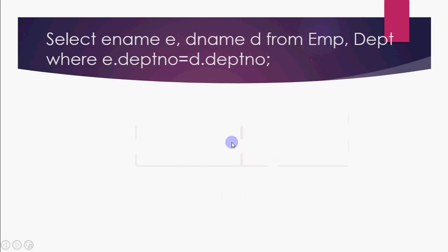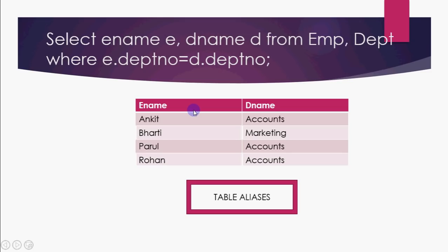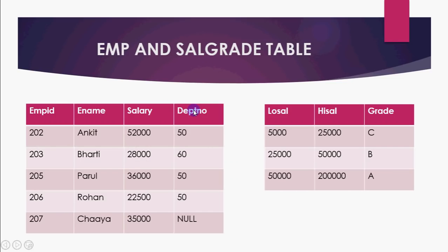Tables can also have aliases to shorten the query. The same query can be rewritten as: SELECT ename, dname FROM emp e, dept d WHERE e.department_number = d.department_number. Here, writing FROM emp e gives emp the alias e, and dept d gives dept the alias d. The result is the same — aliases just make the query shorter and easier to write.